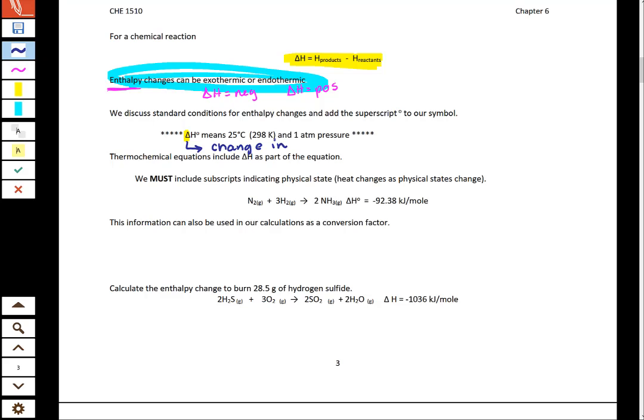So delta H is the change in the enthalpy in comparison to the products versus the reactants.